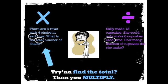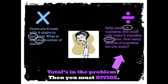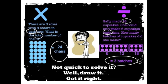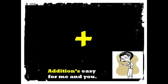Each means you multiply or you must divide. Trying to find the total, then you multiply. Totals in the problem, then you must divide. There it is. Now quick to solve it, we'll draw it, get it right.